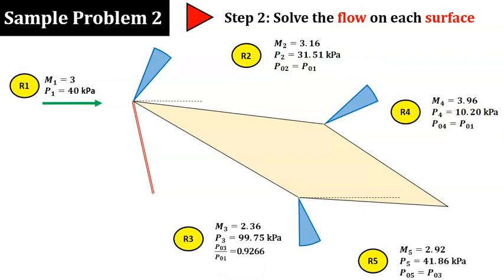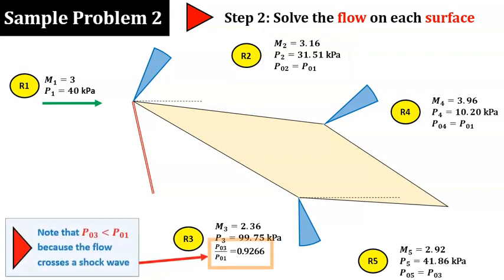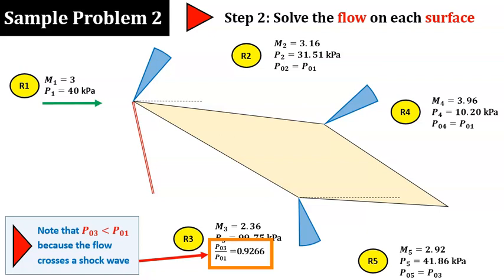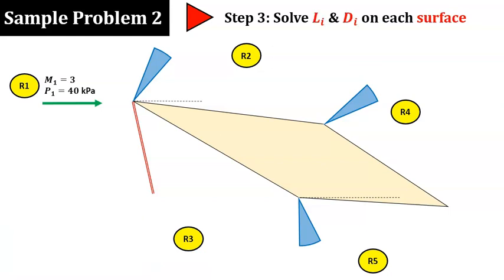The three important parameters that we need to calculate are the Mach number M, the static pressure P, and the stagnation pressure P0. It's crucial that we are aware that P0_3 is less than P_1 because the flow goes through an oblique shock. So, we must calculate P0_3 here to use it when we calculate the flow in region 5. Next, using these flow pressures, you can calculate all the forces.